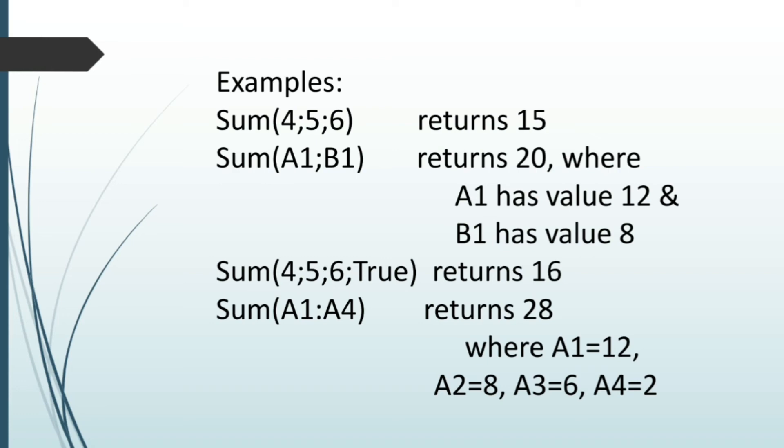Sum of a1:a4, that is range from a1 to a4. Means, if a range is passed to a function, it would calculate the sum of the values of all the cells within the range. So sum a1:a4 would return the value 28. Here, value of a1 is 12, a2 is 8, a3 is 6 and a4 is 2. All these values are added and the value here is 28.